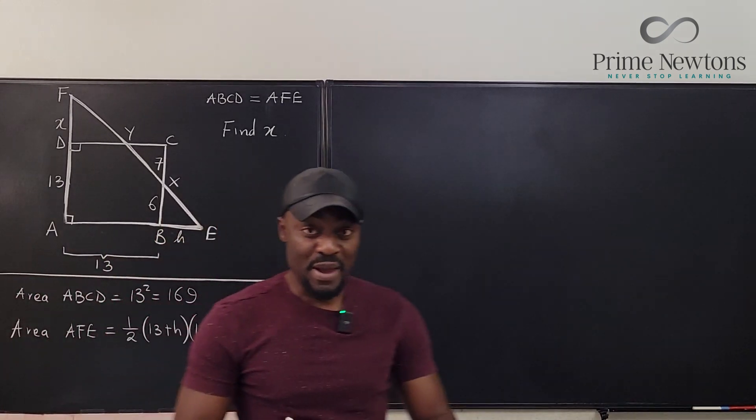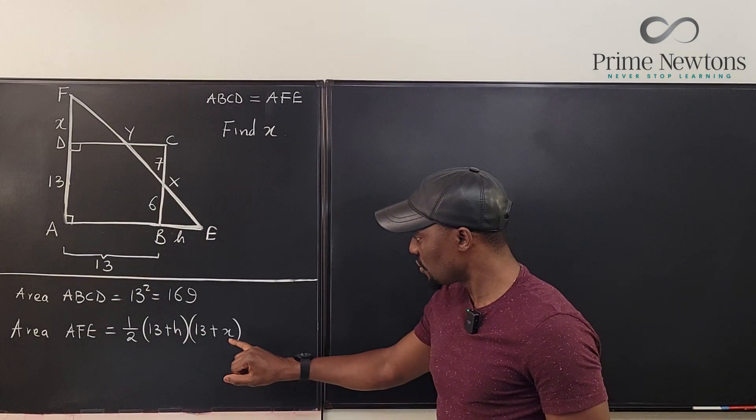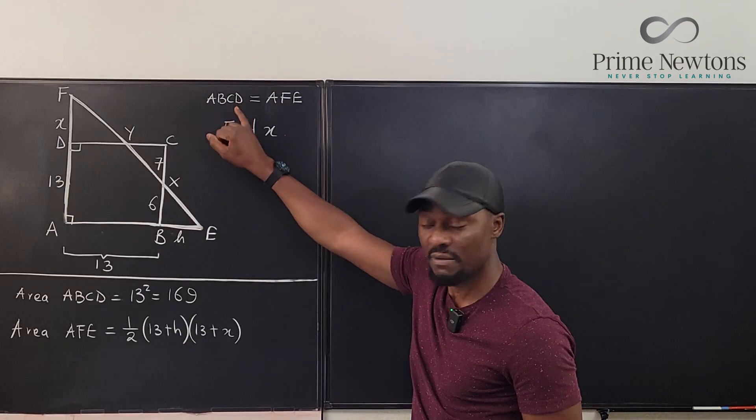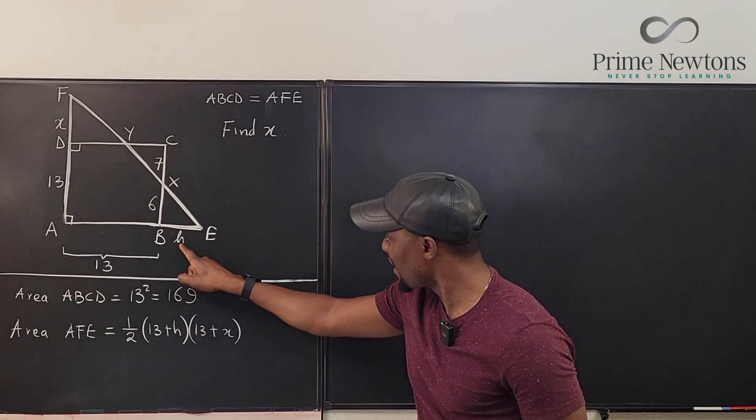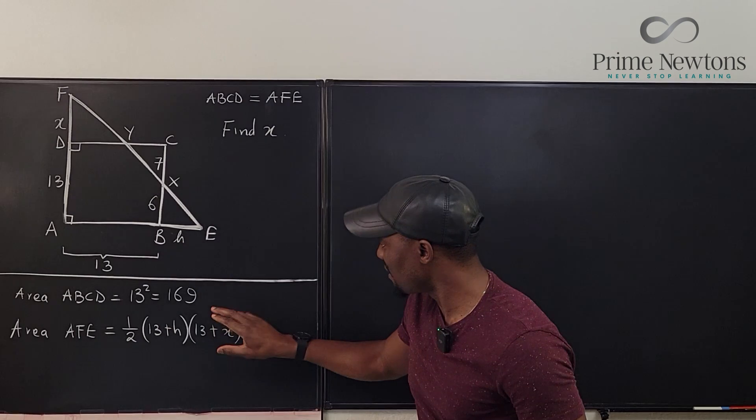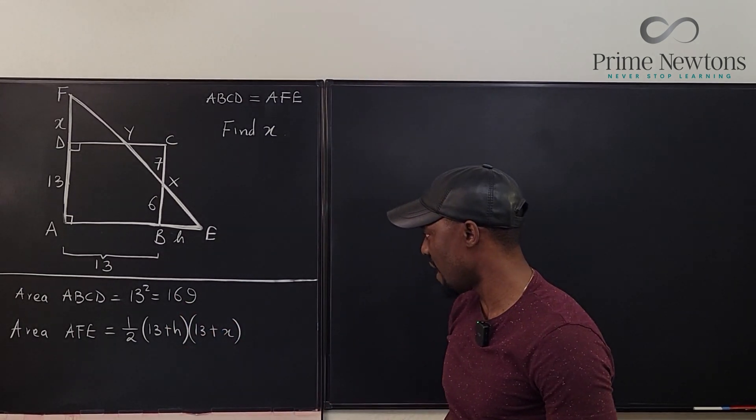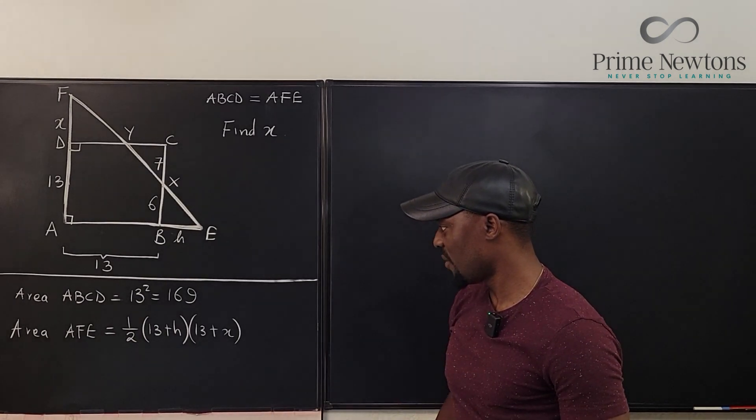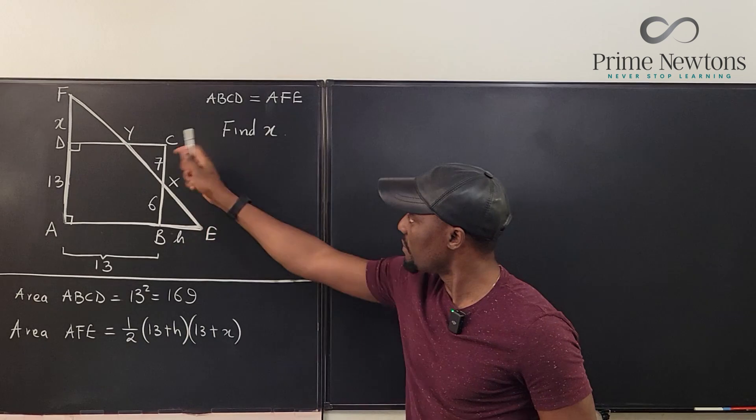So based on what I have, I will be able to solve for X because they told me that the two are the same. I just need to know what H is. That's it. If I can know what H is, I can say this is equal to this. Let me actually write it out. Let me leave it for now. I'm going to come back to it. So how can we find H from what we have here?